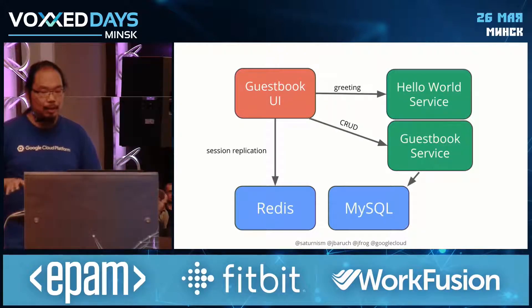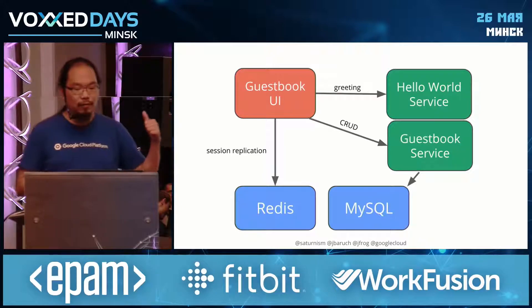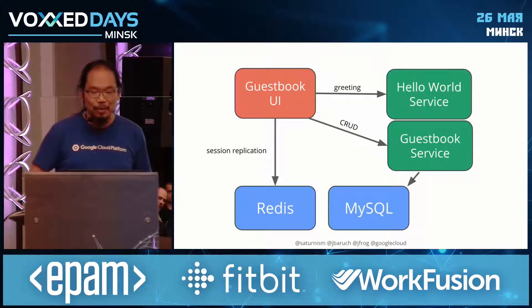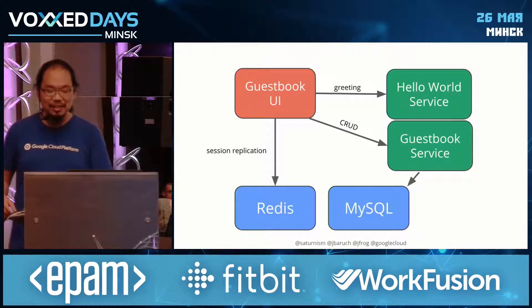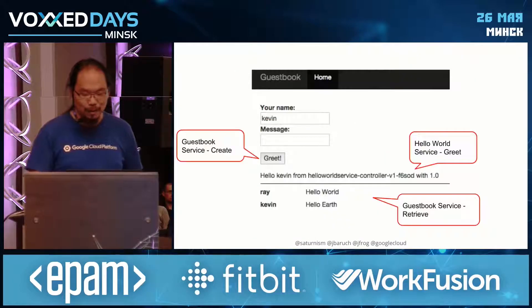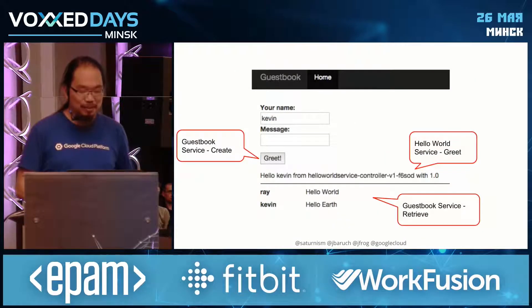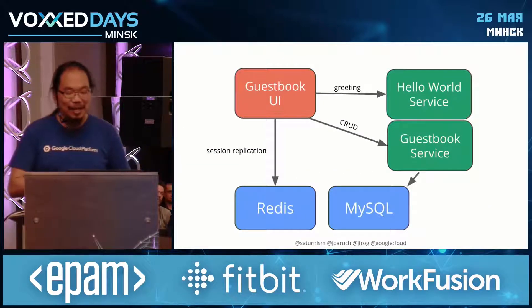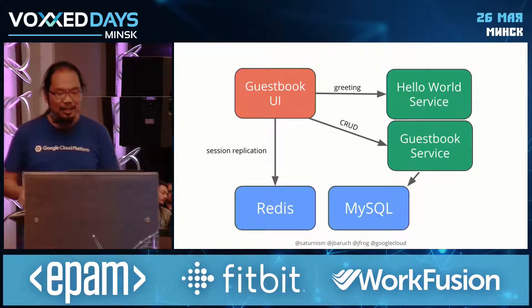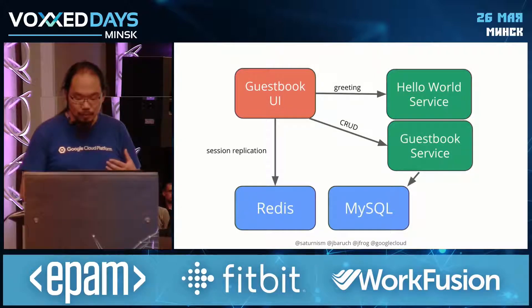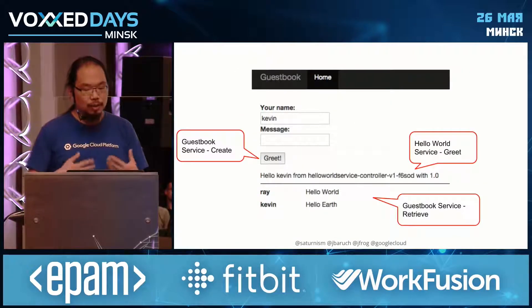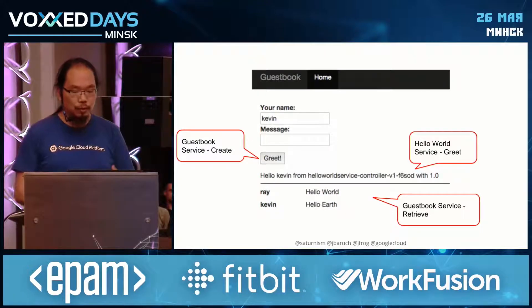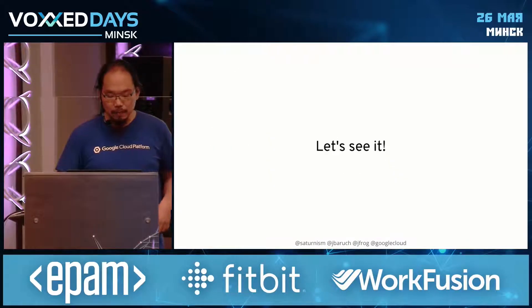Behind the scenes, we're running these in containers, in Kubernetes in an orchestrated fashion. We have three application containers: the front-end, the Hello World service, and the Guestbook service — all of these just for a simple page. And then we have Redis and MySQL. Even though it seems complicated, it demonstrates quite a few points in a microservices architecture deployment.